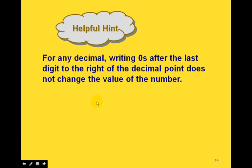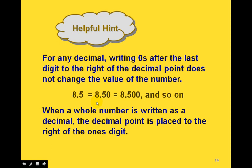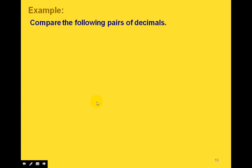One helpful tip: if you need help comparing decimals, you can always write zeros after the last digit to the right of the decimal point — it doesn't change the value. For example, 8.5 is the same as 8.50, which is the same as 8.500. You can also write a whole number in decimal form by putting a decimal point to the right of the ones digit and adding as many zeros as needed.